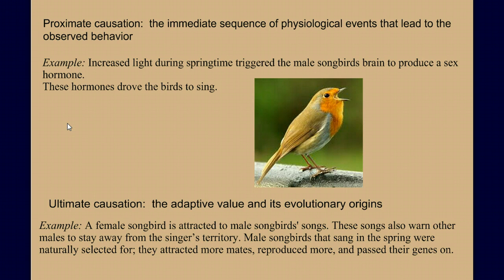But what's the ultimate causation? Why do birds sing at all? Well, there's an adaptive value to that behavior — it has evolutionary origins. So the ultimate causation has to do with what's the evolutionary benefit of that behavior. In this case, when the male bird sings, it attracts female birds to mate with, and it may also mark its territory and keep other males away. This behavior of singing actually increases the bird's evolutionary fitness and allows them to pass their genes along better.